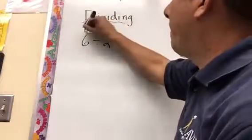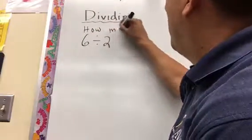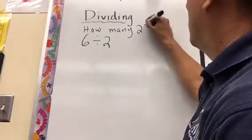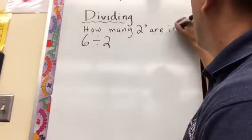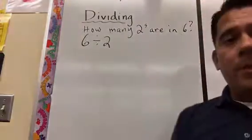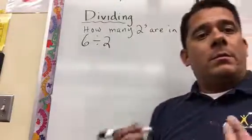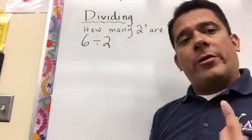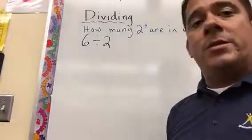So if we restructure that, how many 2s are in 6, we know that the answer is still the same. There are three 2s, because 6 divided by 2 is 3.